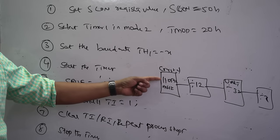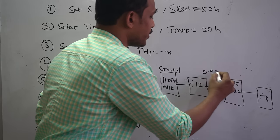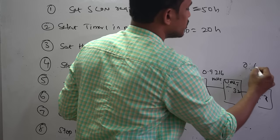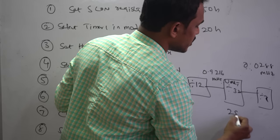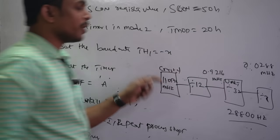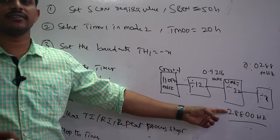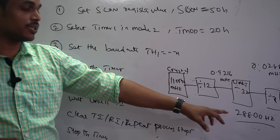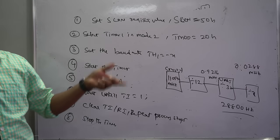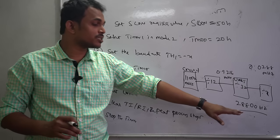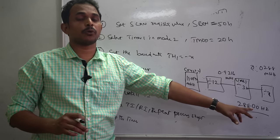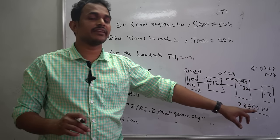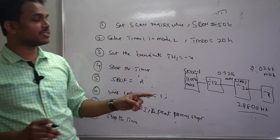Dividing 11.0592 MHz by 12 gives 0.9216 MHz, and dividing again by 32 gives 0.0288 MHz, which equals 28800 Hz. This exact integer value of 28800 Hz is why 11.0592 MHz is the preferred crystal frequency — other frequencies produce fractional values that cause bit errors in communication. Using 11.0592 MHz ensures an accurate baud rate without any rounding issues.